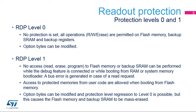In Level 1, read protection is set for the flash memory, the backup SRAM, and the backup registers. In this level, protected memories are only accessible when booting from user flash memory. Whenever a debugger access is detected or boot is not set to a flash memory area, any access to the protected memories generates a system hard fault, which blocks all code execution until the next power-on reset. Note that option bytes can still be modified in this level, making it possible to remove the protection.